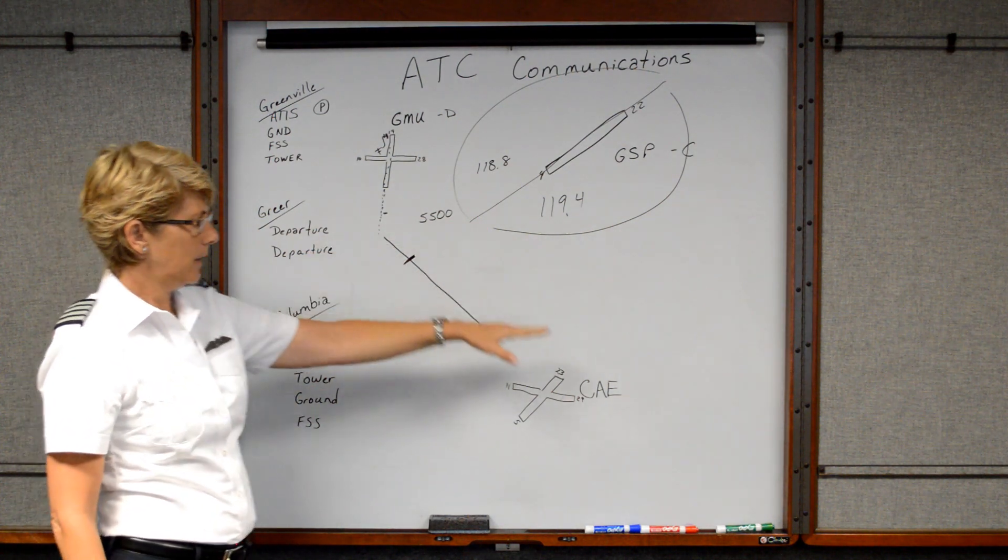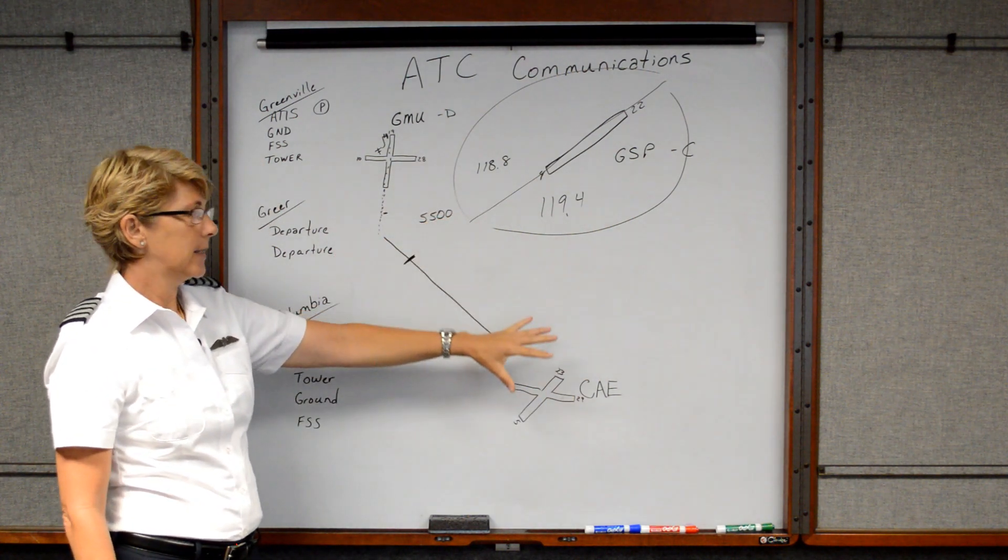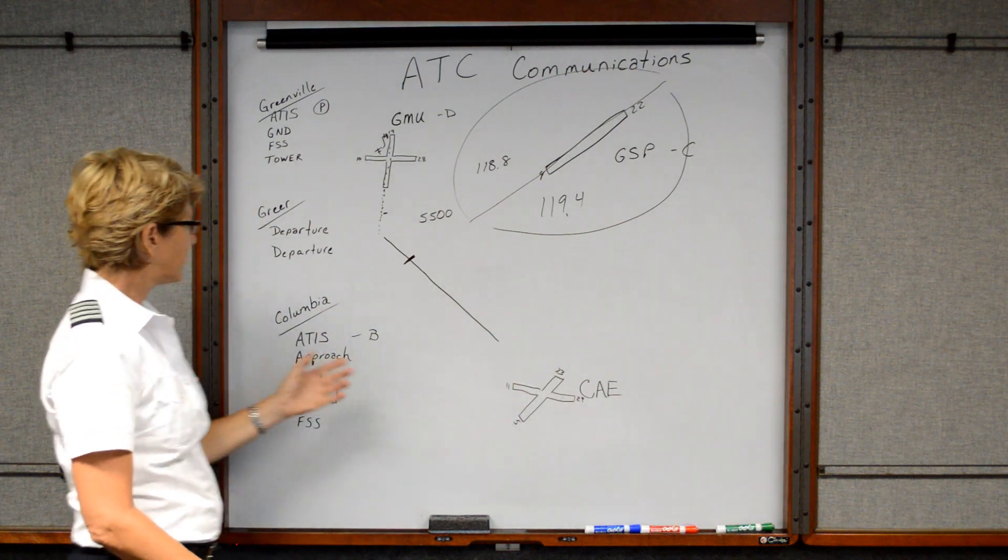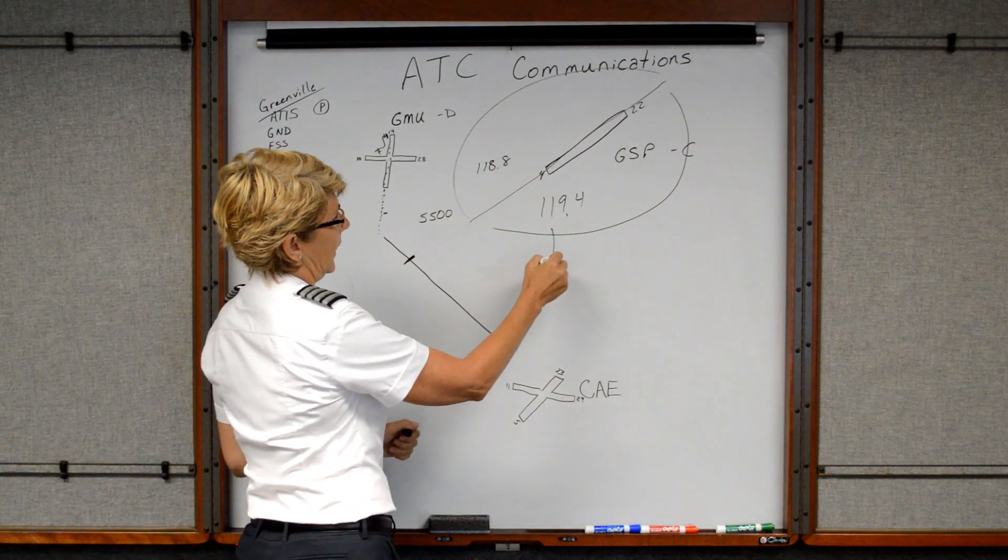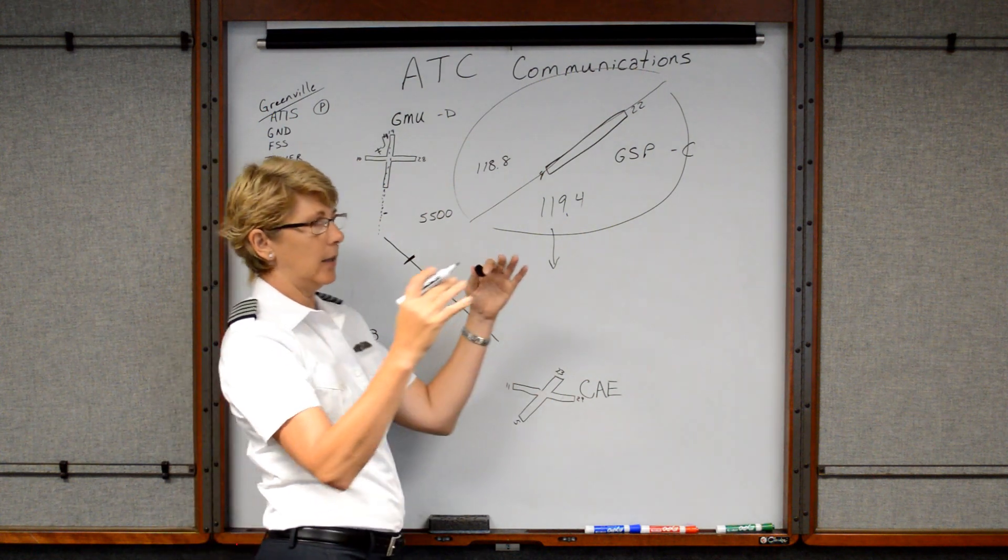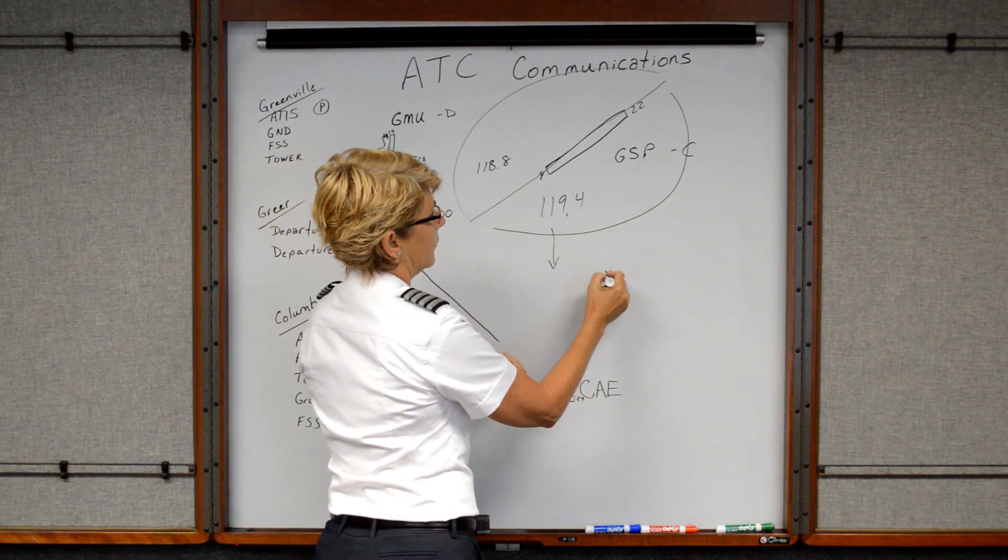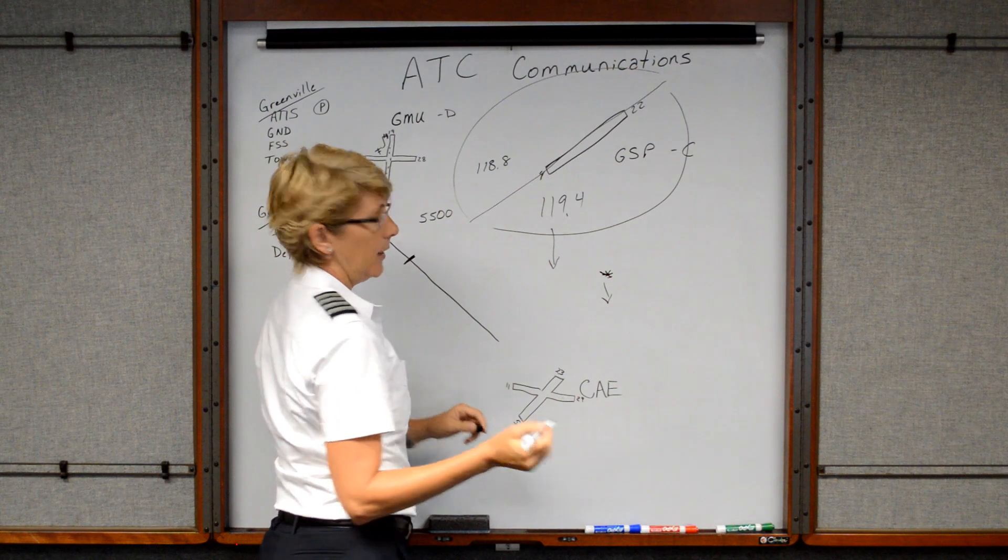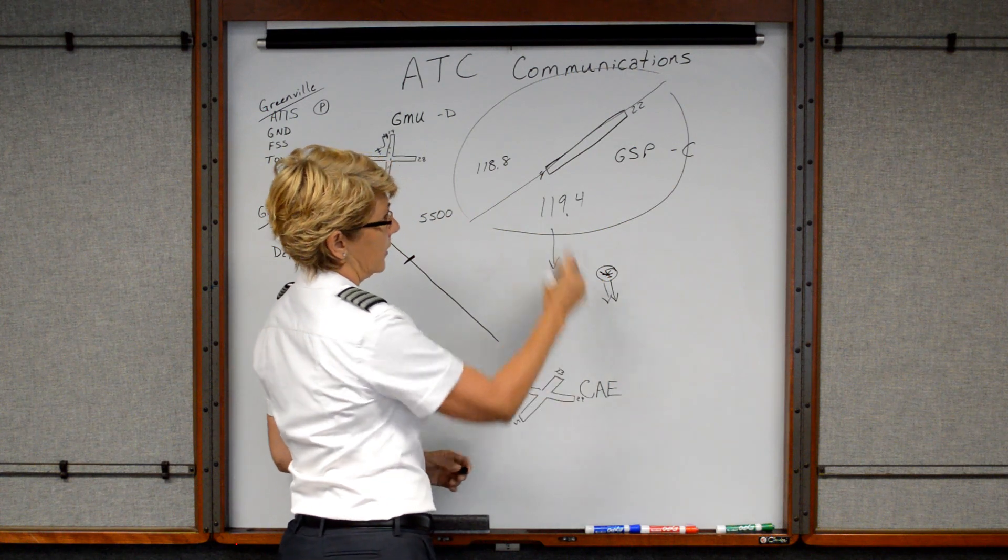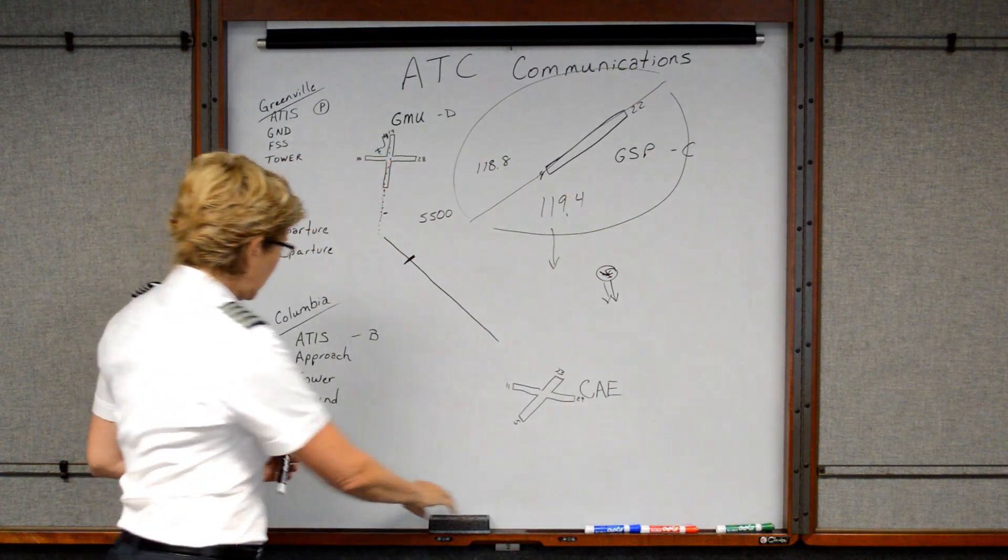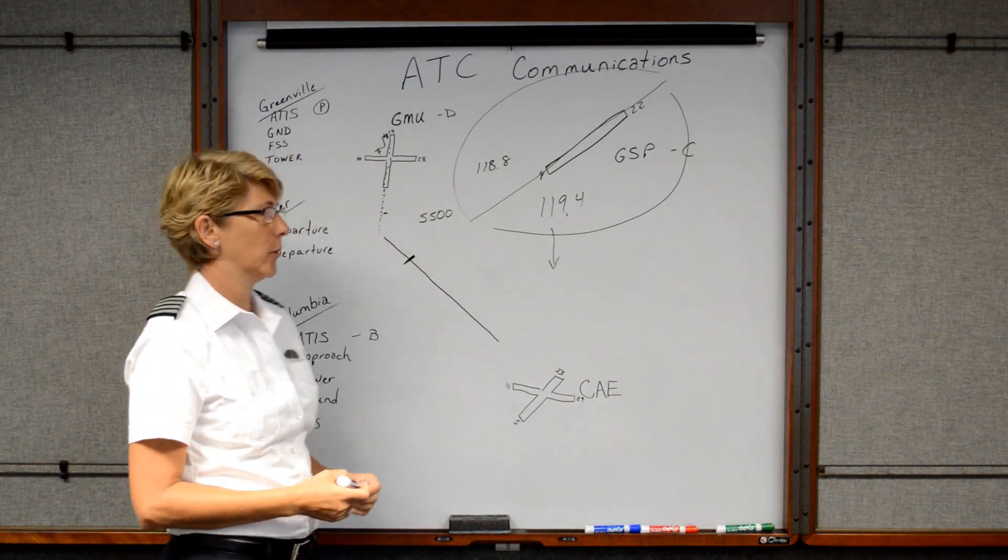And then somewhere along the way, Greer is going to tell you to contact Columbia approach. So this was departure because you're departing the area. Now we contact approach because we're arriving at that area. Columbia approach is going to, they're waiting for you because Greer gives them a handoff in the radar room. They're sitting in the dark room and they just see little blips flying on the screen. They can tag you and make you kind of flash as you're flying down toward Columbia. And then the Columbia radar guy will kind of pick you up. And that way they know they're controlling you now instead of Greer. But anyways, we don't have to learn to be controllers, but it's nice to know how the system works. So it makes a little more sense to you.